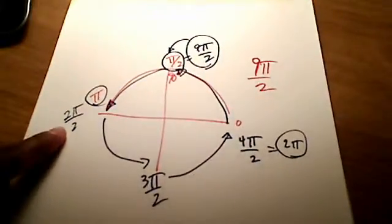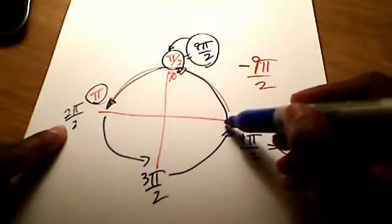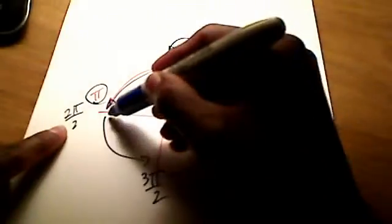And I hope you see that if I went in the opposite direction, all right, negative 9π over 2, I would just go in the opposite direction. This is negative 1π over 2, negative 2π over 2, negative 3π,